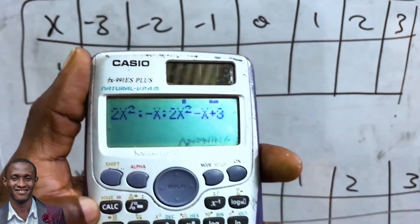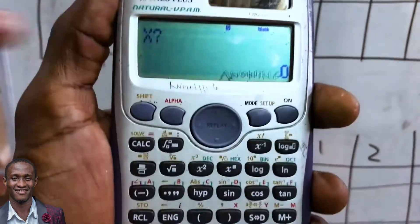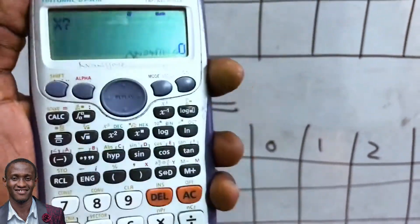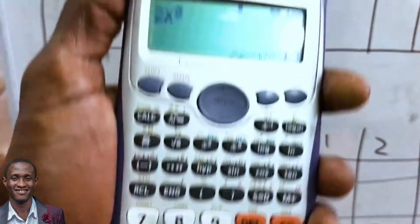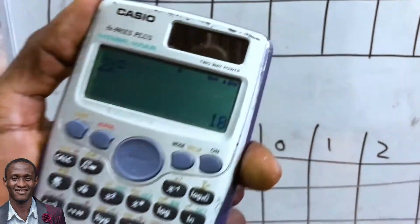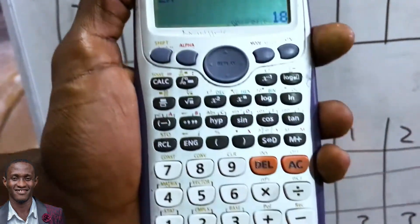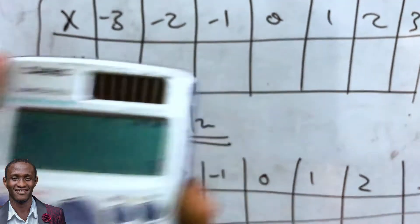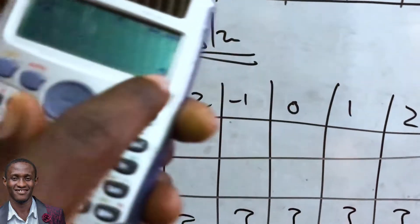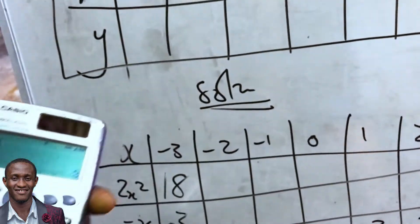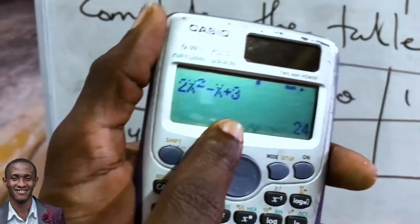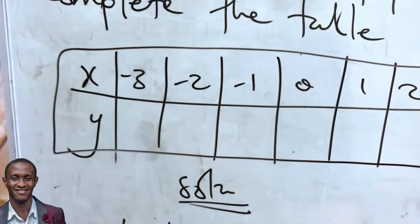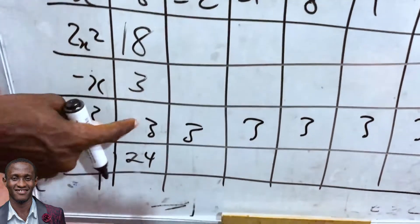Press Solve or Calc — it asks what x is. For the first value, input -3 and press equals. You see 2x² gives 18. Press equals again and -x gives 3. Press equals again and the full equation gives 24. Verify: 18 + 3 + 3 = 24.